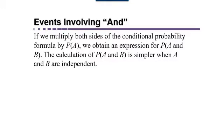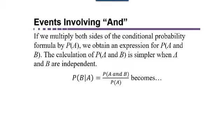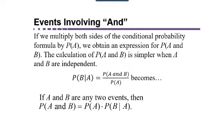This is related to conditional probability because the conditional probability formula had the probability of A and B in it. Remember, the probability of B given that A had occurred is the probability of A and B divided by the probability of A. We can rearrange that equation by multiplying both sides by the probability of A, and we actually get a formula for the probability of A and B. The probability of A and B occurring is the probability of A times the probability of B given A.